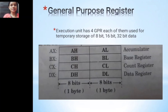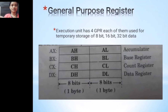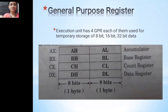Next are general purpose registers. In the execution unit there are four general purpose registers: AX, BX, CX, and DX. AX is the accumulator, BX is the base register, CX is the count register, and DX is the data register.